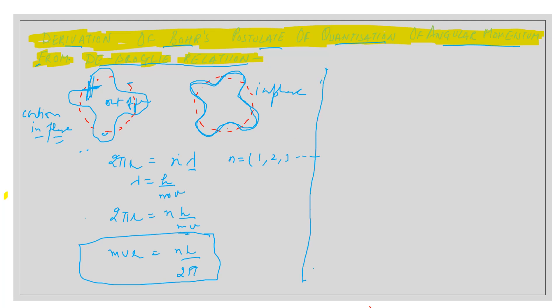Now, next thing is there: number of waves in the nth orbit of Bohr. How many waves will be present in the nth orbit? For that we know that 2πr = nλ, so the number of waves is 2πr/λ.